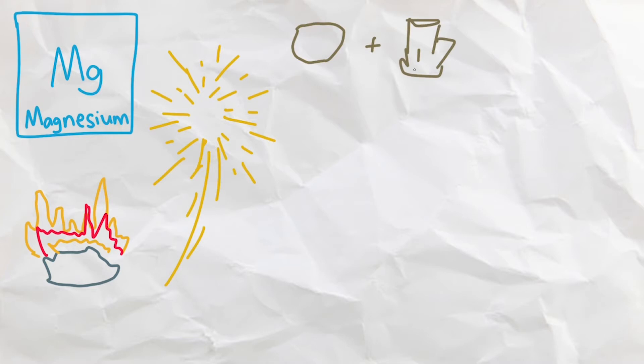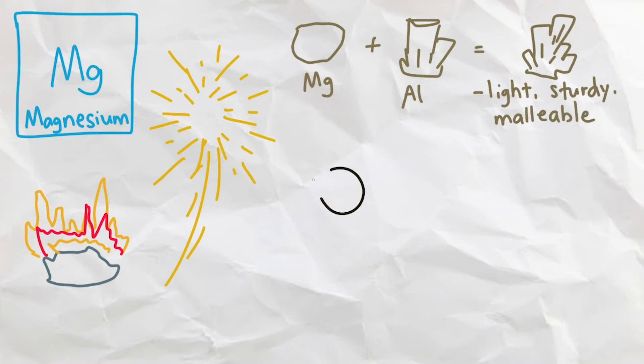It is less dense than aluminum, but when alloyed together, it gives the alloy the properties of being lightweight, sturdy, and easily malleable. For this reason, it is often used in many everyday objects such as bicycles, cameras, laptops, power tools, and even airplanes.